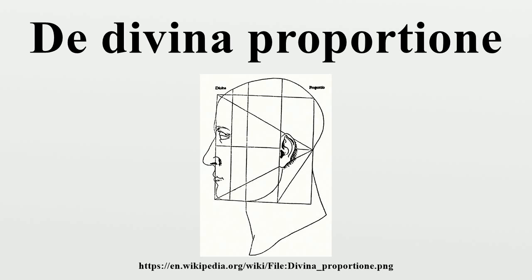The first part, Compendio Divina Proportione, studies the golden ratio from a mathematical perspective and explores its applications to various arts in 71 chapters. It also contains a discourse on the regular and semi-regular polyhedra, as well as a discussion of the use of geometric perspective by painters such as Piero della Francesca, Melozzo d'Arli, and Marco Palmesano.